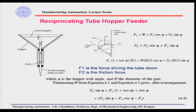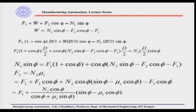If we have the part jamming, we have three equations. The first is the force balance equation along the vertical direction, the second is along the horizontal direction, and the third is drawn by taking moments about point A. From these three equations, the value of W can be taken from the first equation and substituted into the third equation.